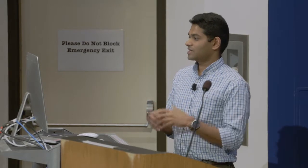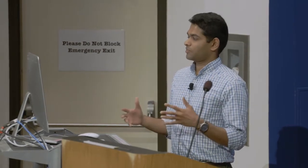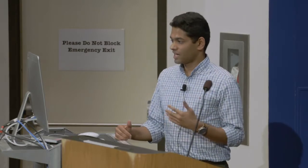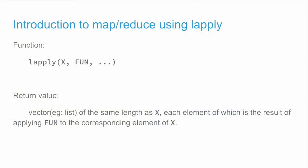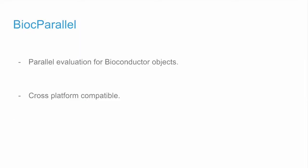Initially, I just want to go over what this MapReduce paradigm is in R. You use the function LApply, you give it a vector x, and you have some function you want to apply on every element of this vector. And the magic happens behind the scenes. So in Bioconductor, we have a package called BiocParallel, which does the same kind of things for Bioconductor objects.